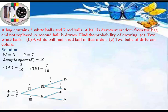For the next branch, if the first ball drawn was red (probability 7/10): drawing a white ball second gives probability 3/9 because the number of red balls reduces by one but white balls remain unchanged at 3, with a sample space of 9. For drawing a red ball second, the number of red balls reduced by one, so instead of 7/10 we have 6/9.